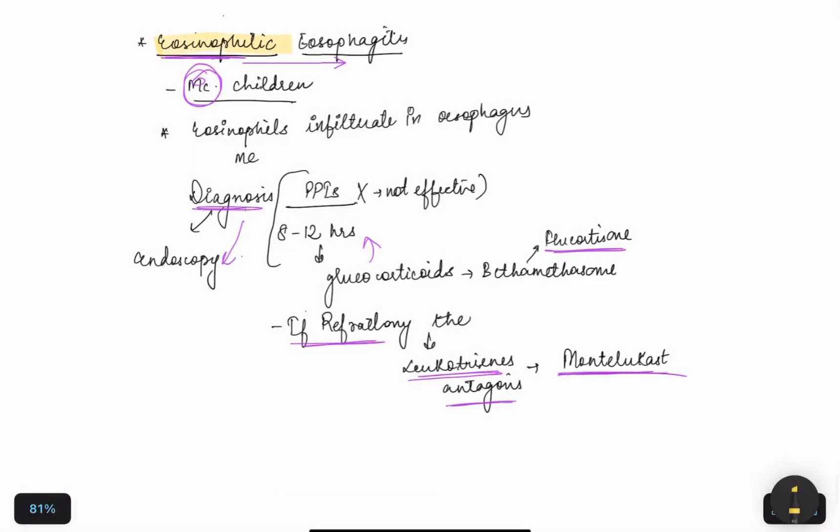The last topic we have is eosinophilic esophagitis. It is most common in children. As the word itself indicates, it is the infiltration of eosinophils in the lining of the esophagus. It is the inflammation and infiltration of eosinophils in the lining of the esophagus. So diagnosis is endoscopy and the treatment is proton pump inhibitors.